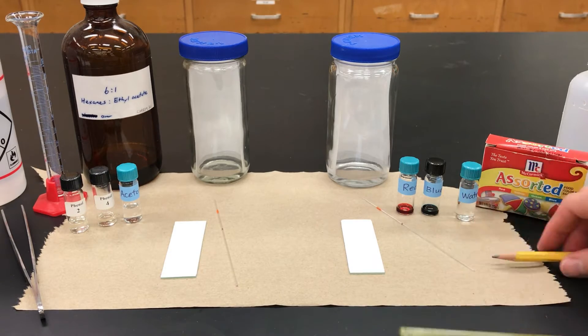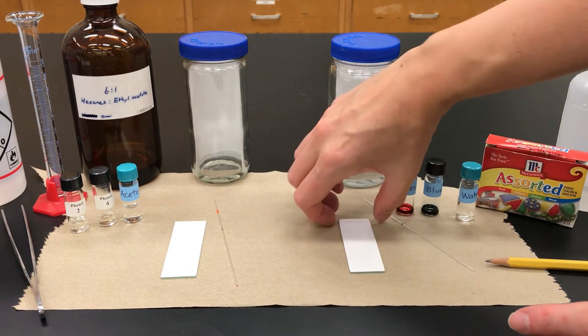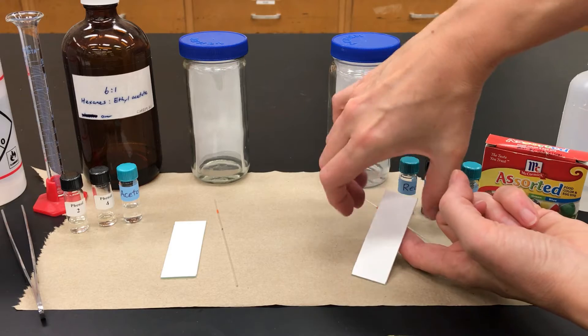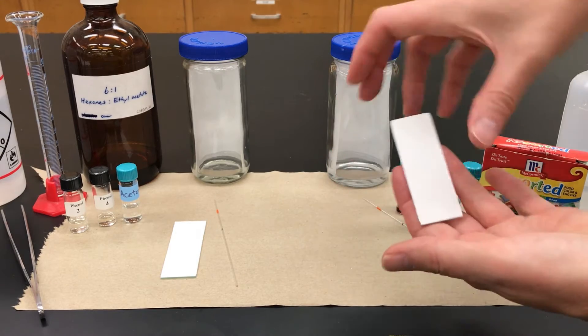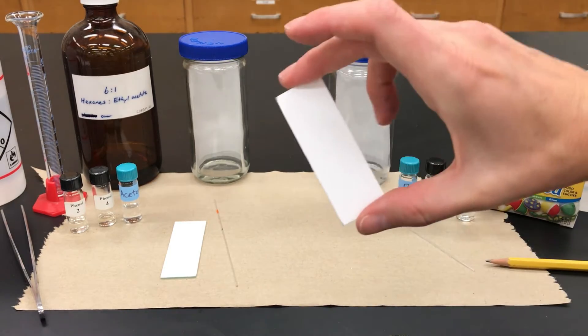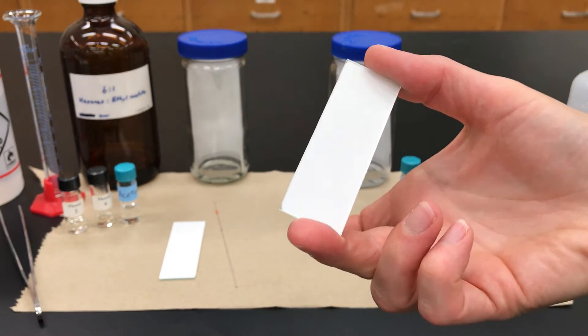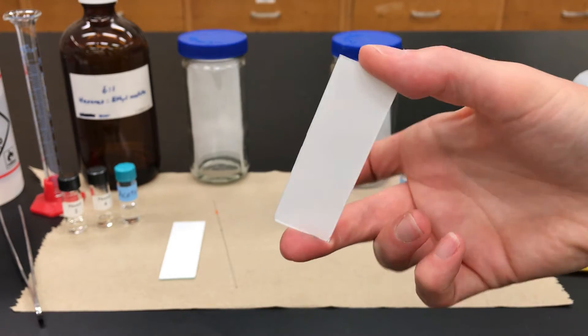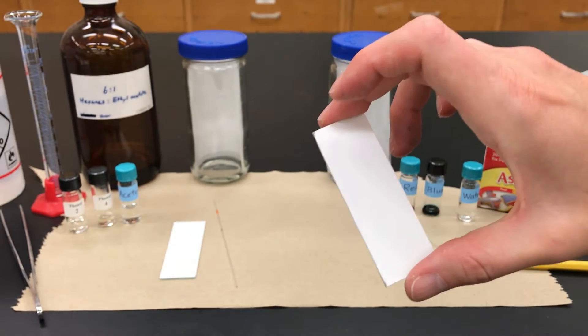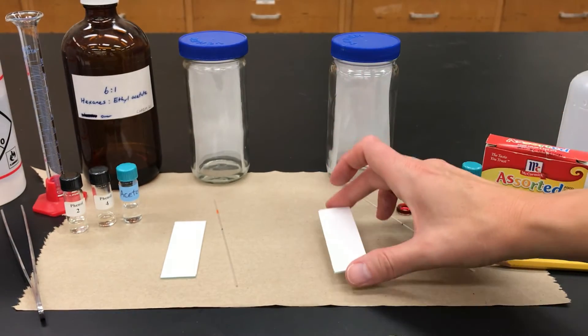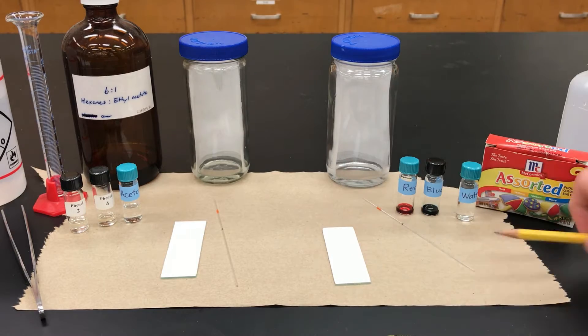Next, I'm going to prepare my TLC plate. The ones that I use are glass-backed and they have a very thin layer of silica gel over the front side. If I move this around, you might see some reflections. On the back is glass, but on the top is more muted and that white part is the absorbent where all of the separation is going to happen.